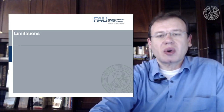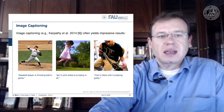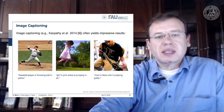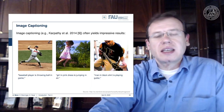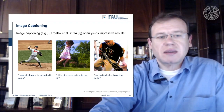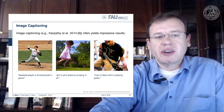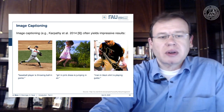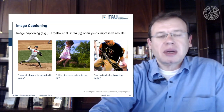Well, of course there are some limitations. For example, tasks like image captioning yield impressive results. You can see that networks are able to identify a baseball player, or a girl in pink dresses jumping in the air, or even people playing guitar.